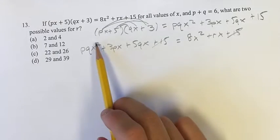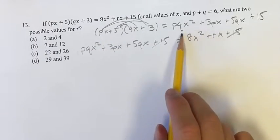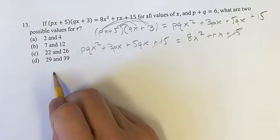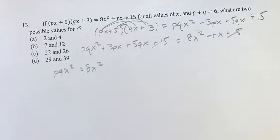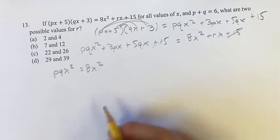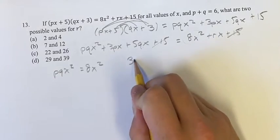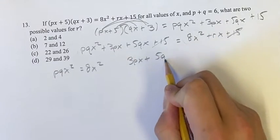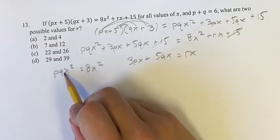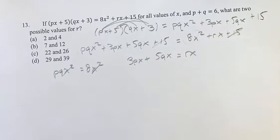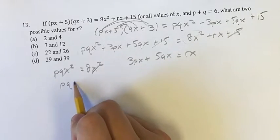So what we're left with is this x² term is equal to this x² term. So pqx² is equal to 8x². What's left? These two x terms is going to be equal to this x term. So 3px plus 5qx is equal to rx. So if you divide both sides by x², these will just cancel out and get p times q is equal to 8.